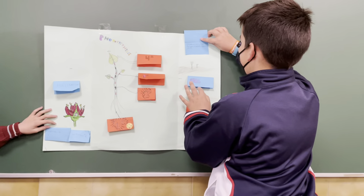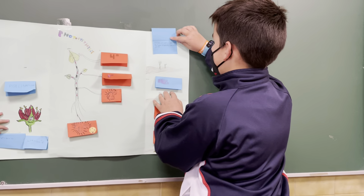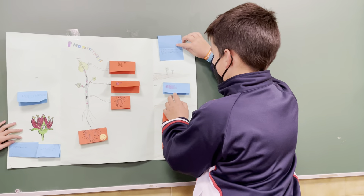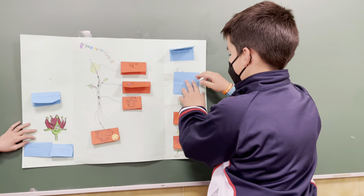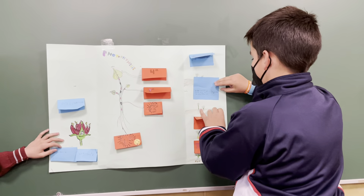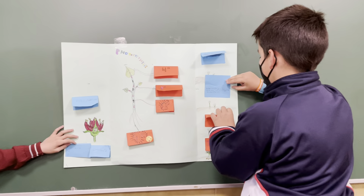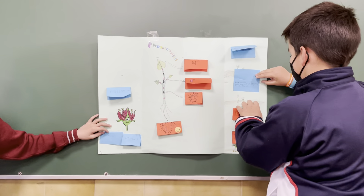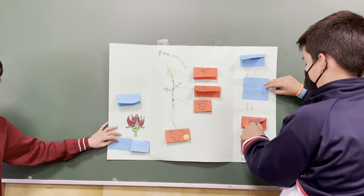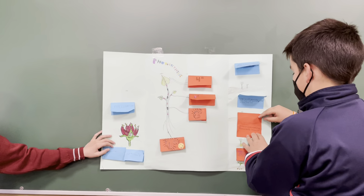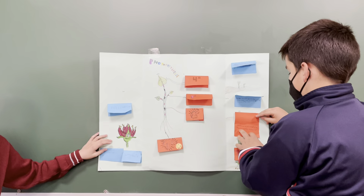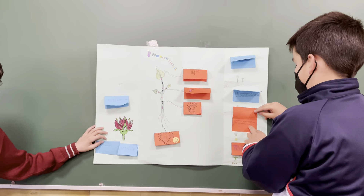Stolons are specialized stems that grow horizontally above the ground. Bulbs are underground stems which store food; roots grow from the bottom of the bulb. Rhizomes are specialized stems that grow horizontally underground.